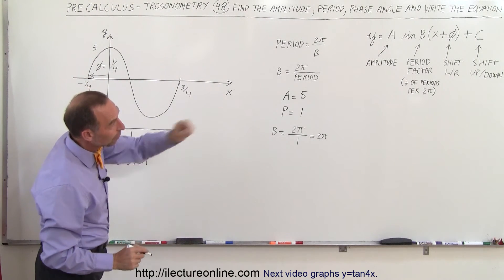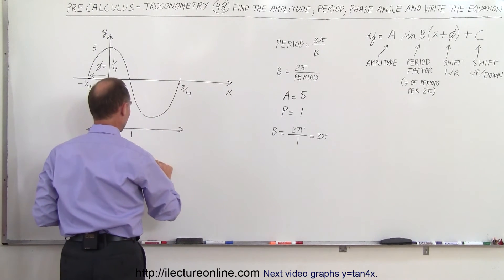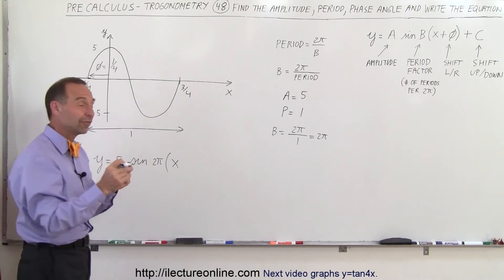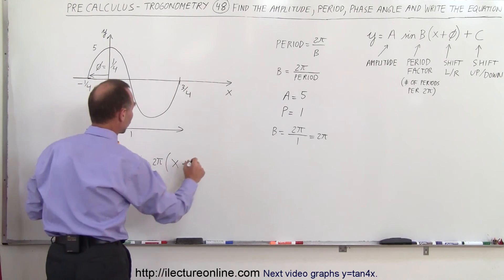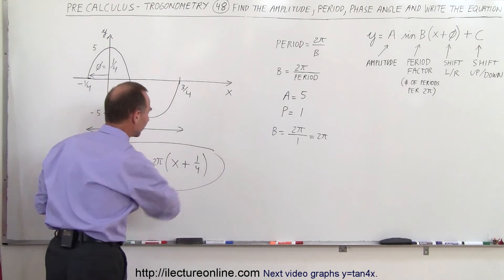For B, the period factor, we have 2π, so sine times 2π. Since the shift is to the left, it's going to be plus, and the shift is going to be one quarter, plus one quarter. That will be the way you write this function.